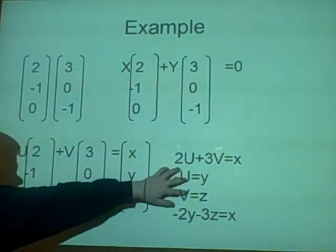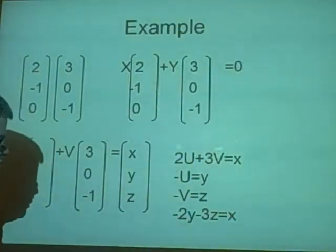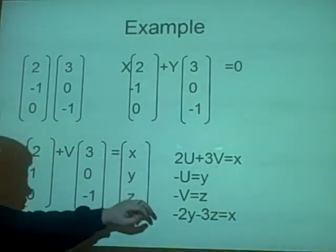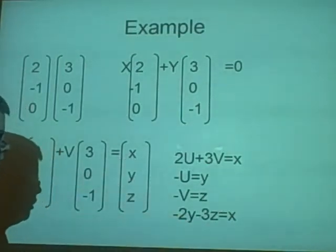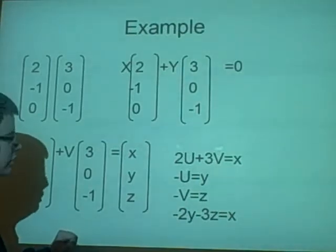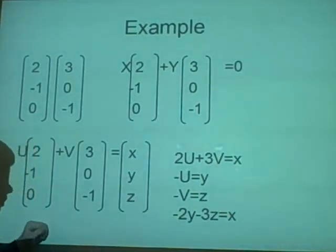Rearranging and substituting gives us x equals -2y - 3z. It does span because we have our values and it works.